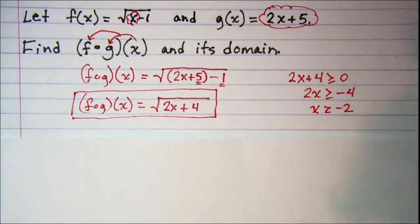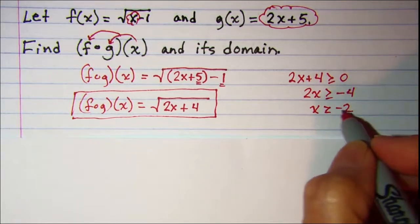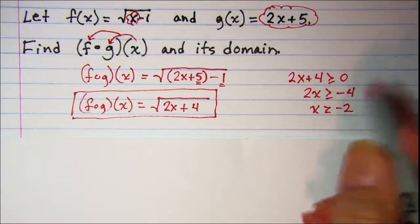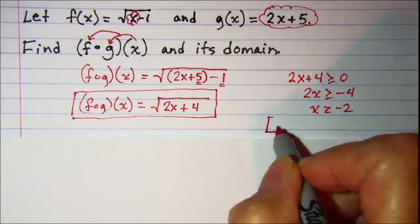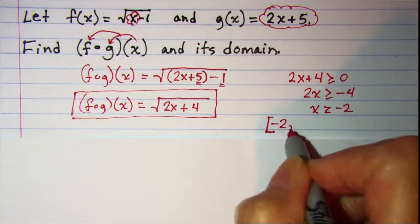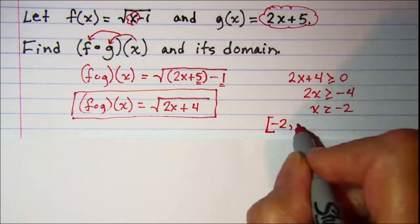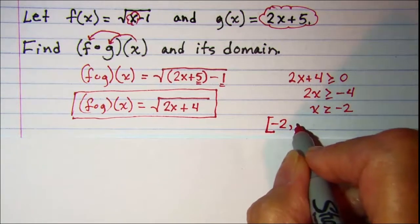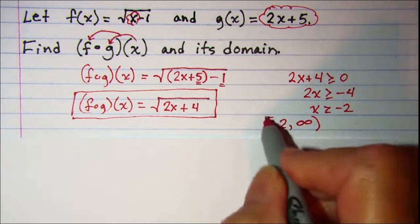So if we show this with interval notation, we want to include negative 2 in the domain and then we want all numbers larger or to the right of negative 2 on the number line. So this is our domain.